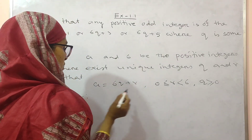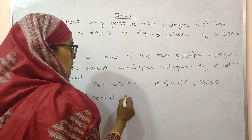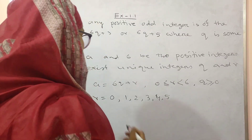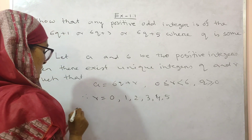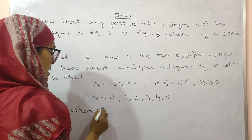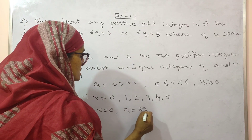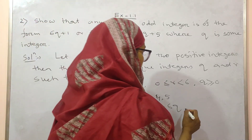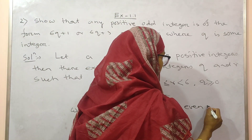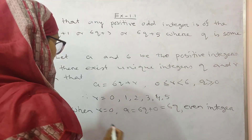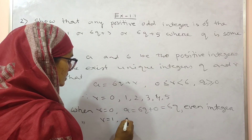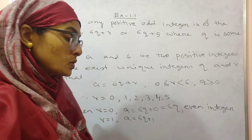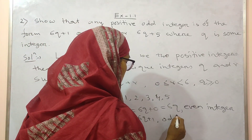Therefore r can equal 0, 1, 2, 3, 4, or up to 5, since r is less than 6. Putting r equal to 0, you will get A equal to 6q plus 0, or simply 6q. This is a multiple of 2, so it is an even integer. When r equal to 1, you will get A equal to 6q plus 1. Since 6q plus 1 is not a multiple of 2, this is an odd integer.